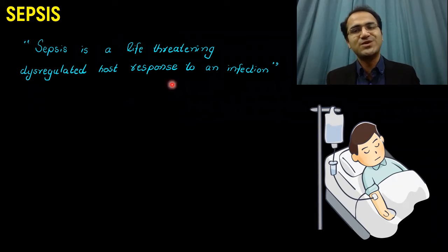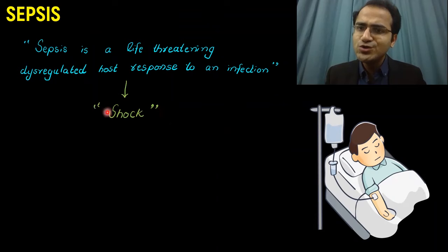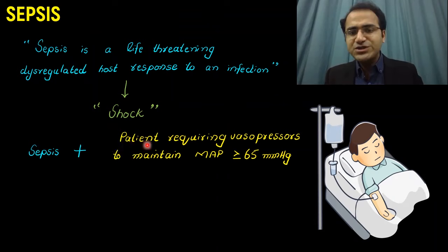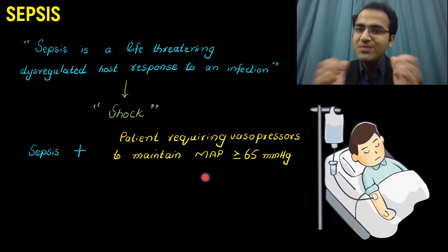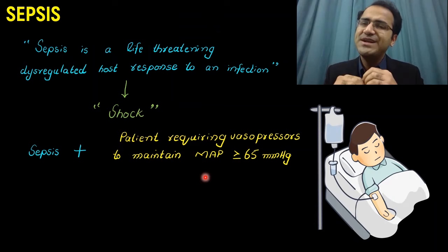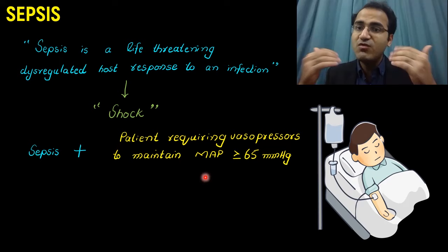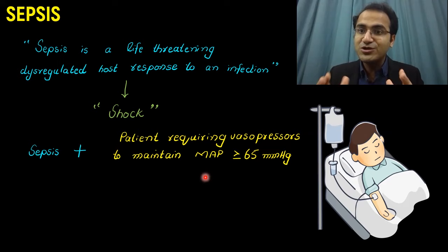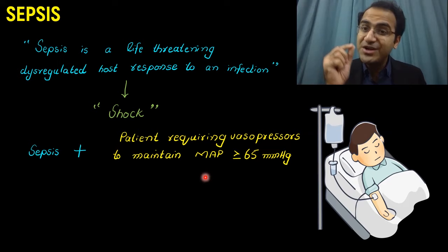These sepsis patients, after some time, usually go into shock. Shock is defined as sepsis with the patient requiring vasopressors to maintain mean arterial pressure greater than or equal to 65 mmHg. It means the body is unable to maintain blood pressure — the host response is so dysregulated it cannot maintain blood pressure, and therefore cannot perfuse vital organs like the brain. To maintain normal blood pressure, you have to give norepinephrine or dopamine from outside. If vasopressors are required to maintain blood pressure, that is shock.